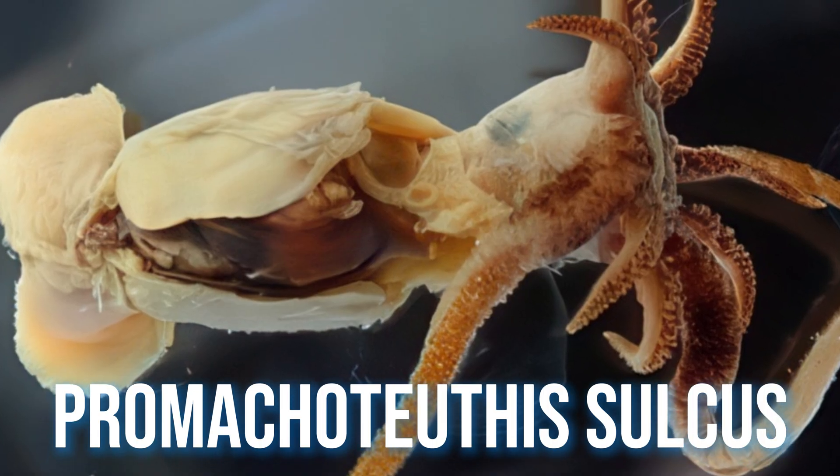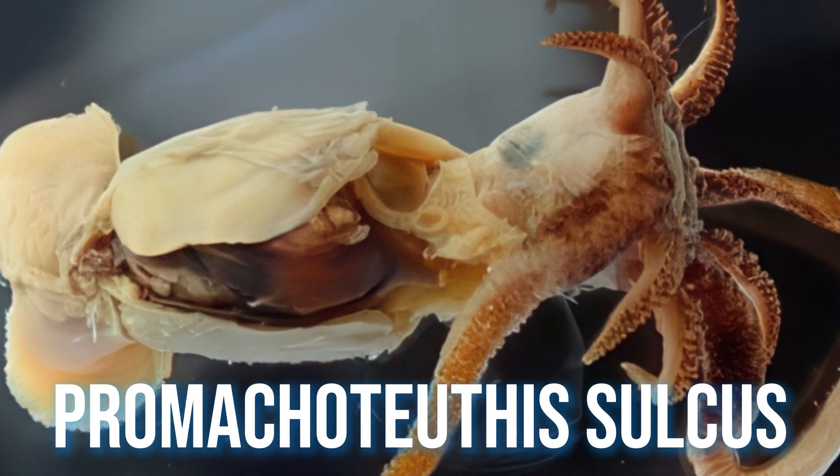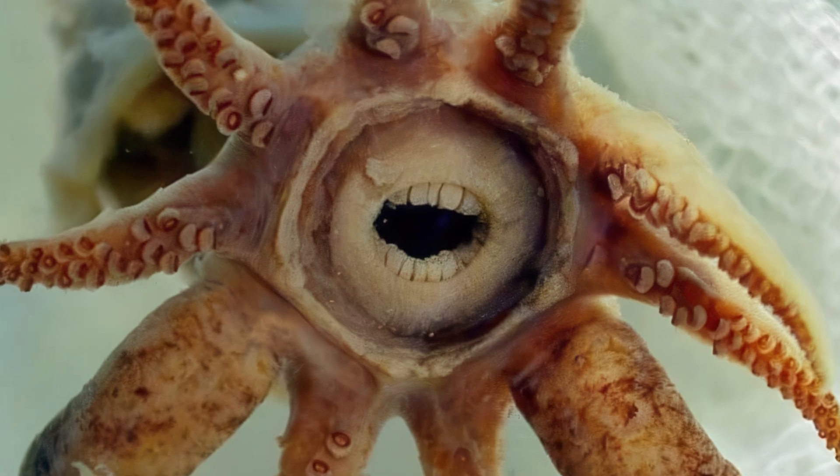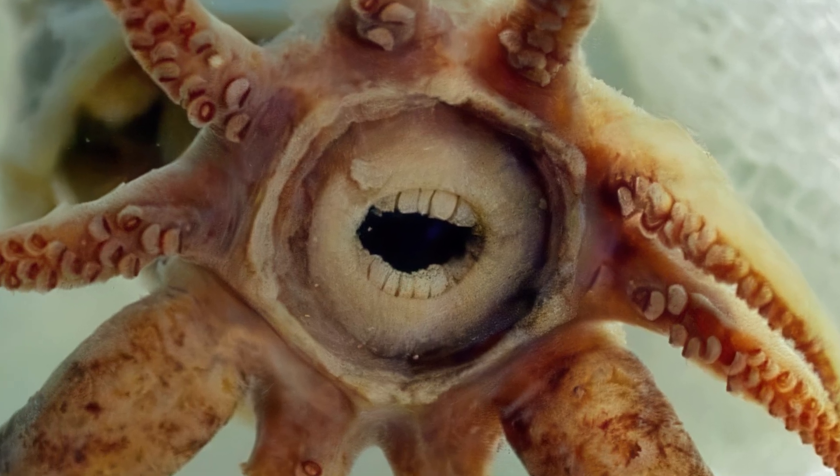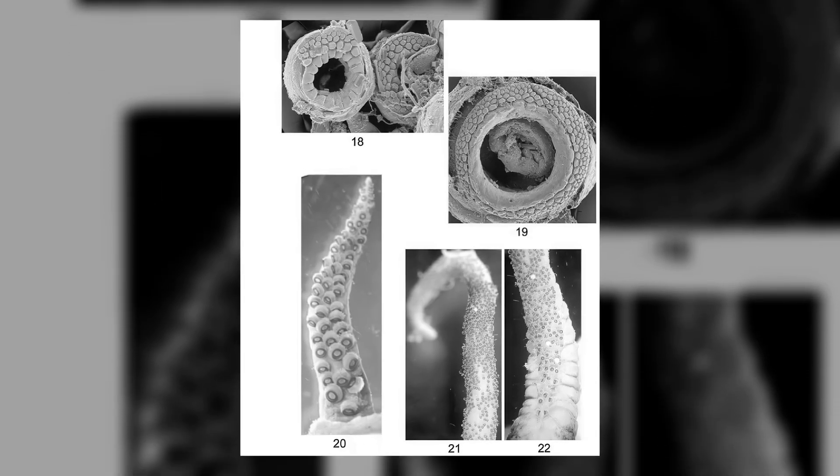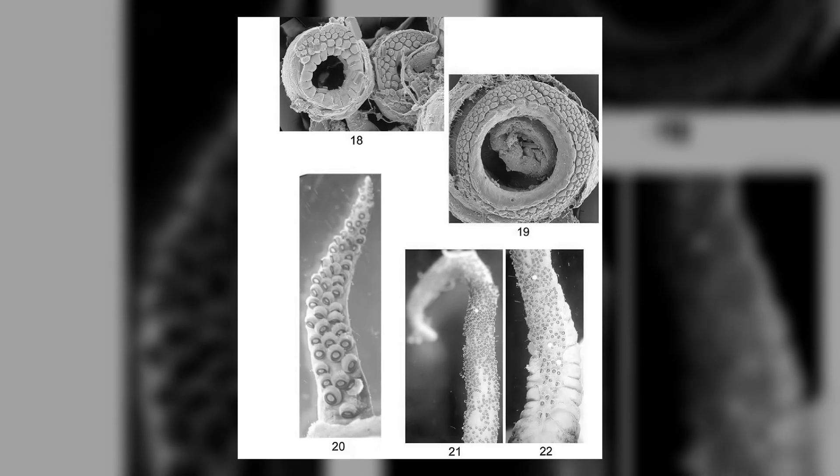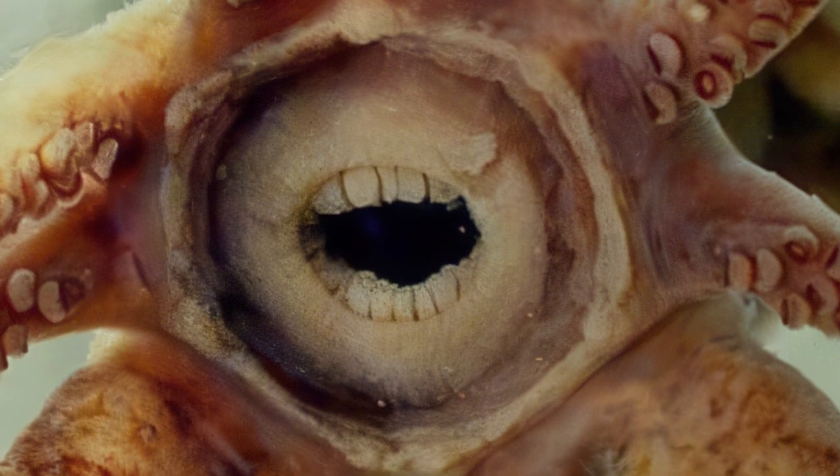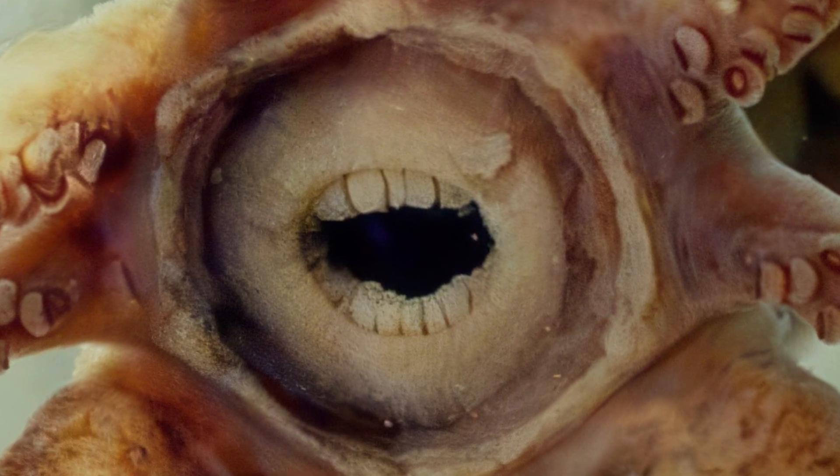Here lies one of the strangest creatures ever discovered, Prometeotuthis sulcus, more hauntingly known as the squid with human teeth. Just one look at its photo is enough to feel as if something from the abyss is staring back. In truth, those teeth aren't teeth at all, but soft tissue folds surrounding its hard beak, structures that may help it grip and tear small planktonic prey. Still, the image is deeply unsettling.